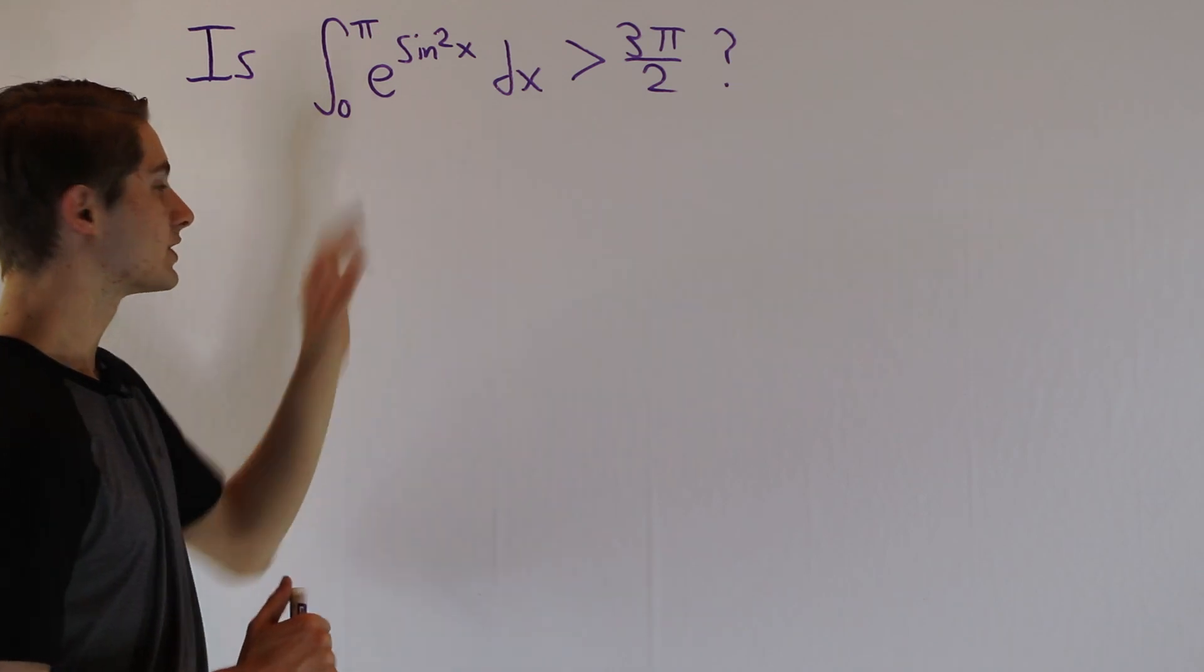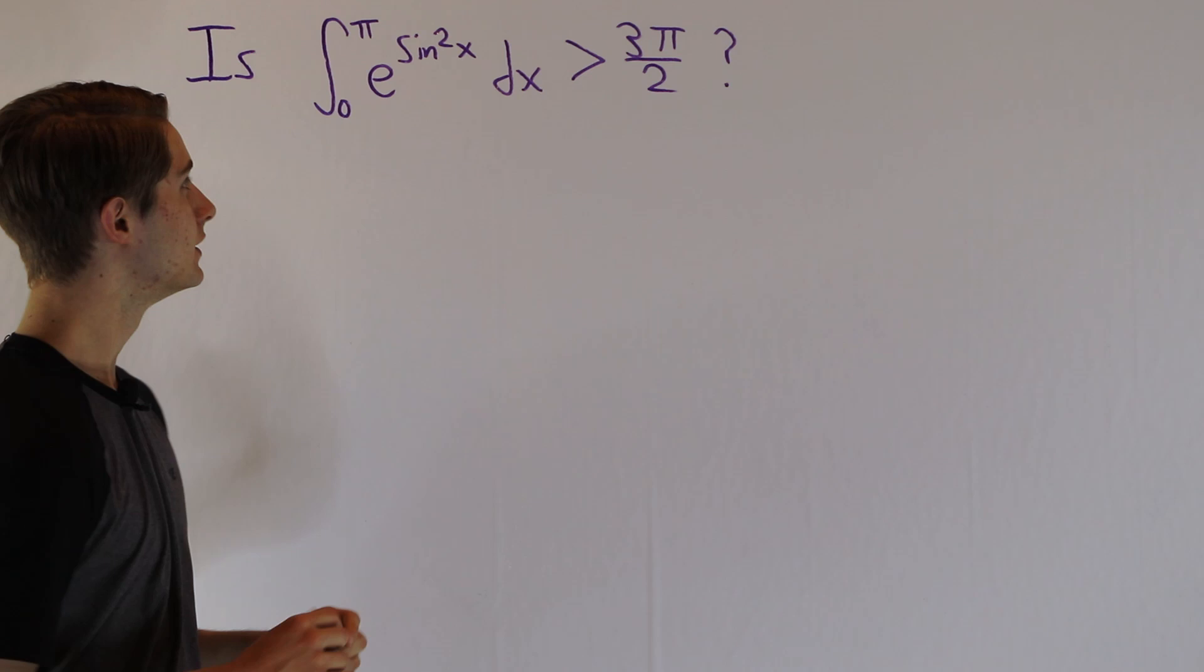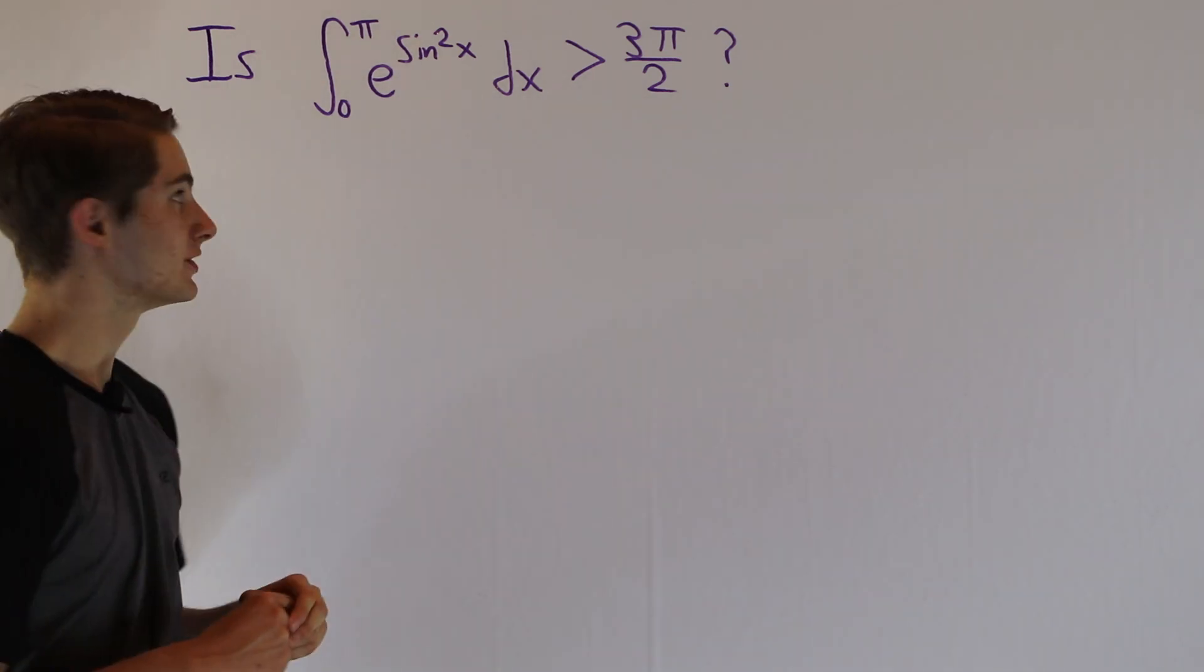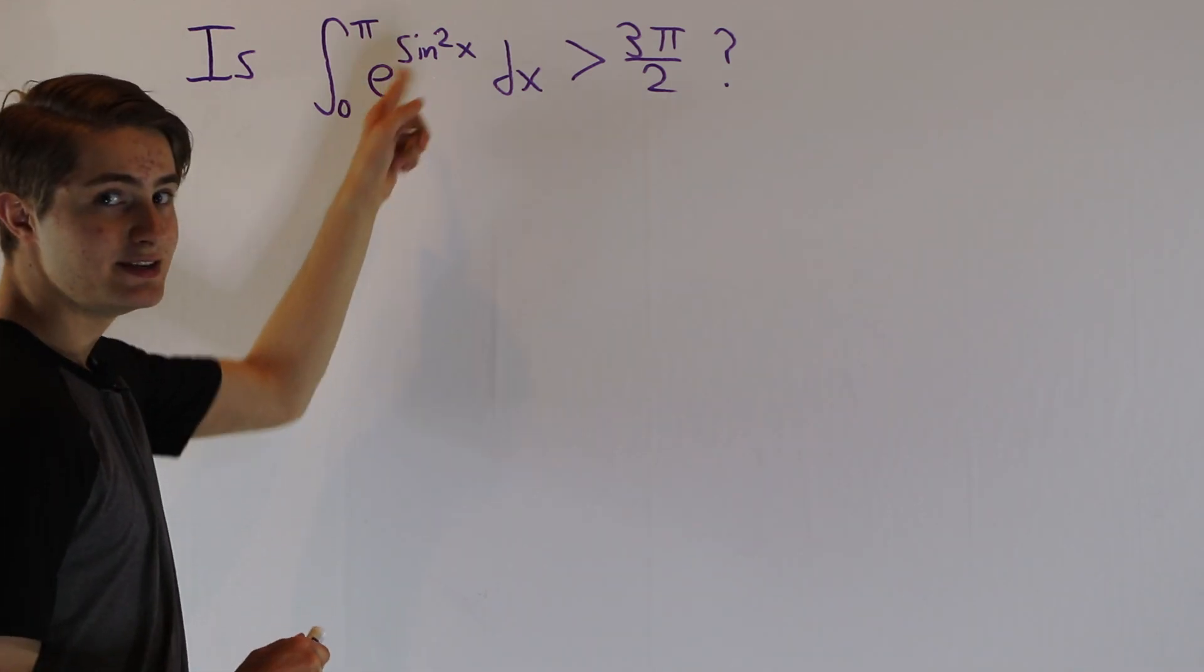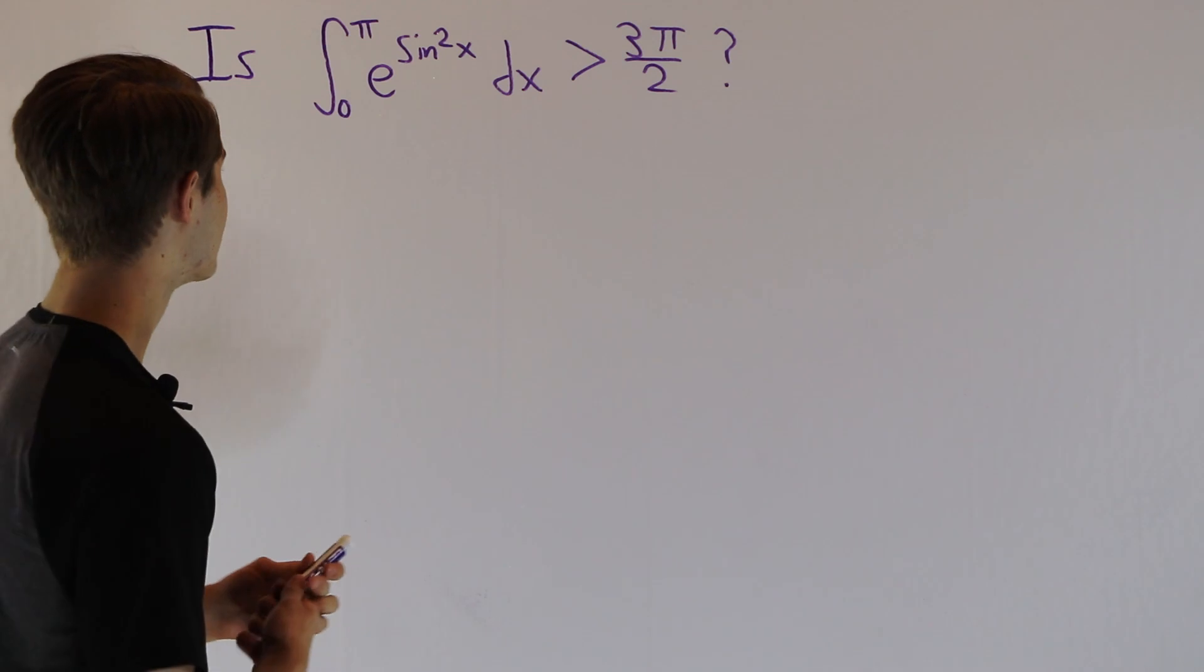So let's see if we can look at this and get some kind of approximate idea of what our answer is going to look like. In order to do that, we see that this integral has e to the power of something, and we know that we can expand e to the x using its Taylor series. So let's see what happens if we try to do that.